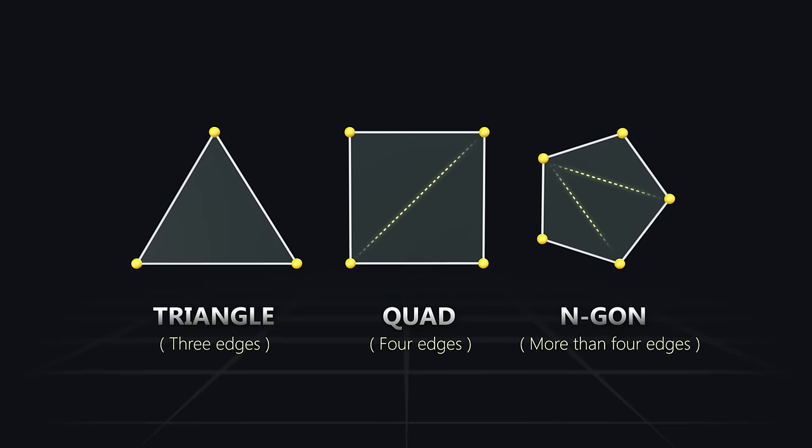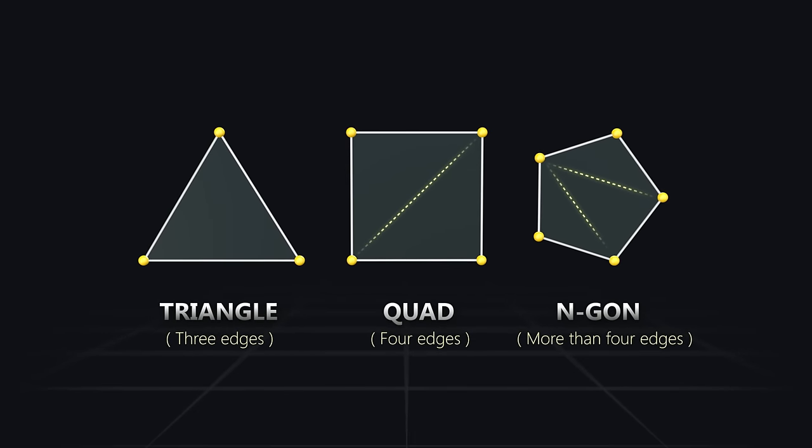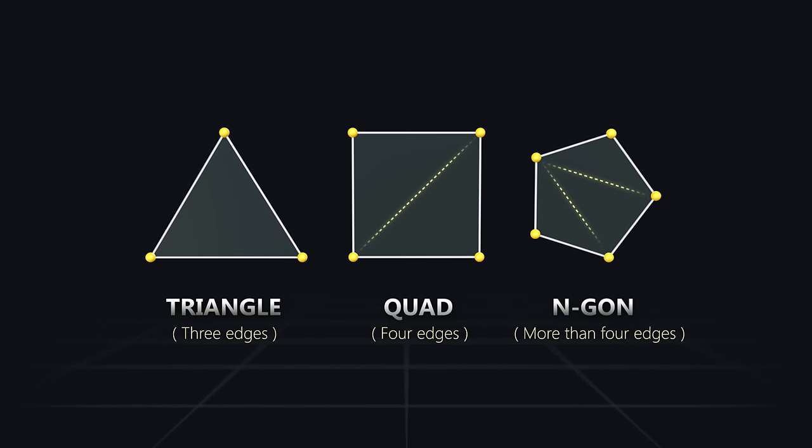Behind the scenes, quads and n-gons are also made of triangles, but the computer simply groups them together and ignores the extra edges.